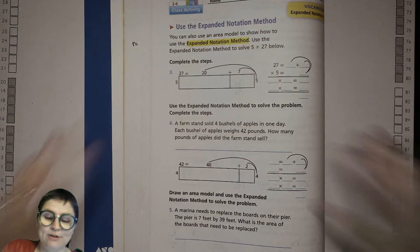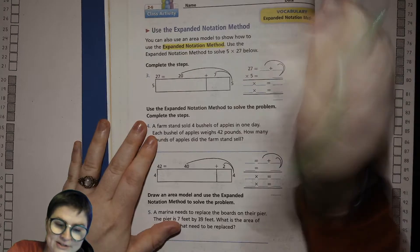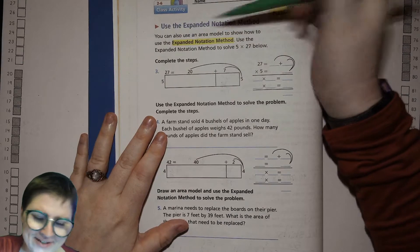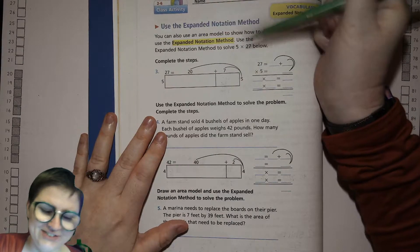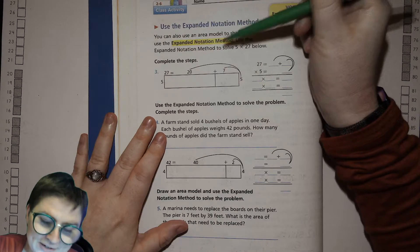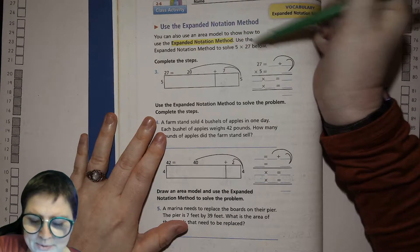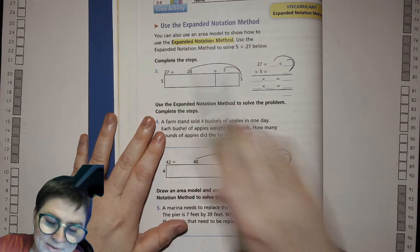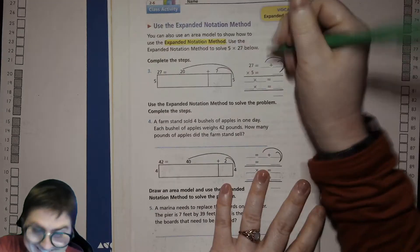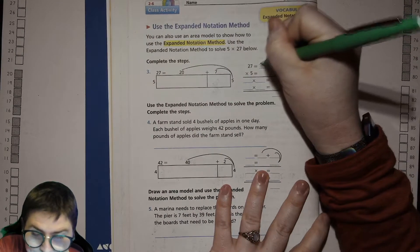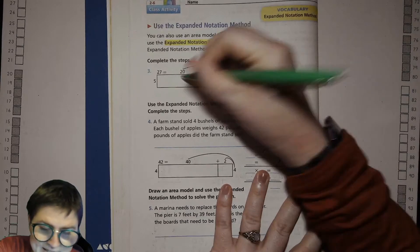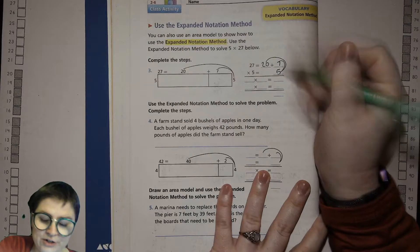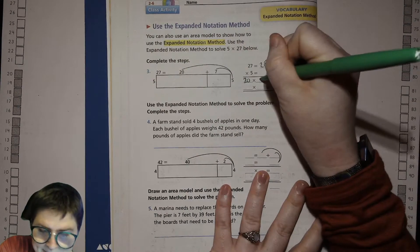A different way to look at it, but very similar, is just doing it all to the side, leaving the boxes empty but writing in expanded notation or expanded form. You can also use an area model to show how to use the expanded notation method. Use the expanded notation method to solve 5 times 27. Here we're multiplying 5 times 27, so we're breaking it up into 20 and 7.